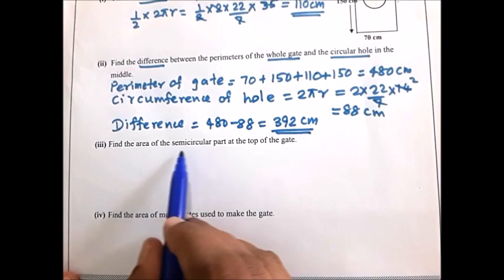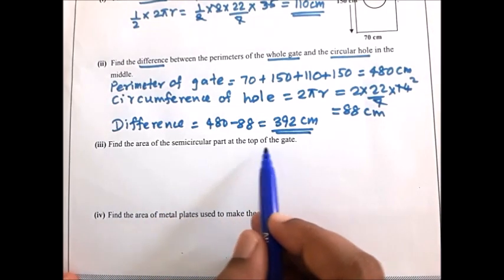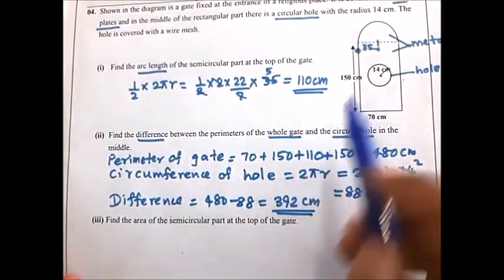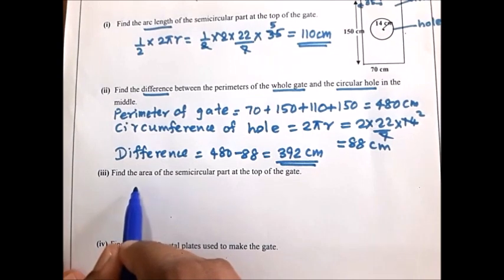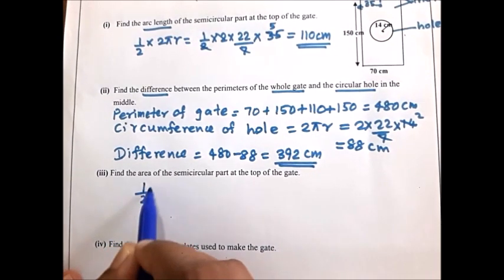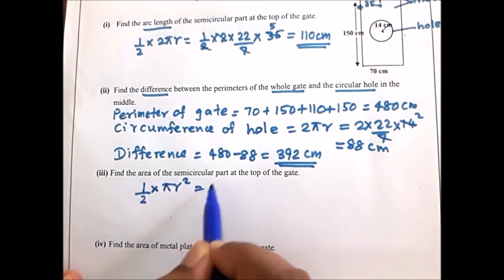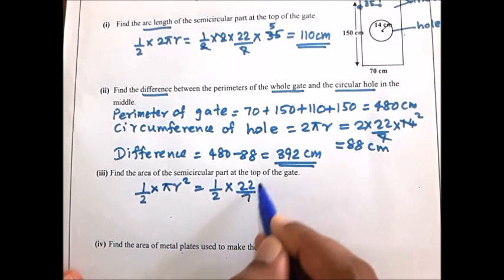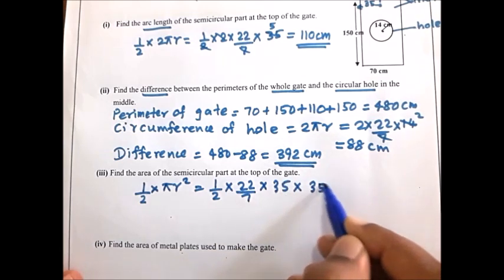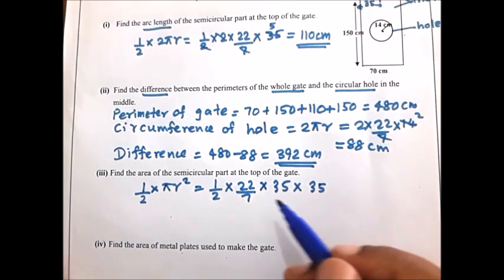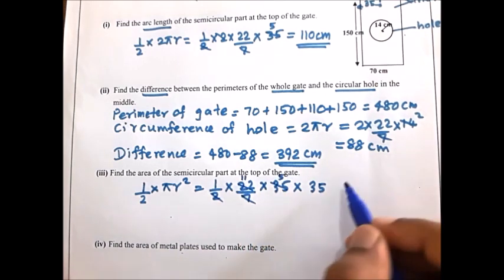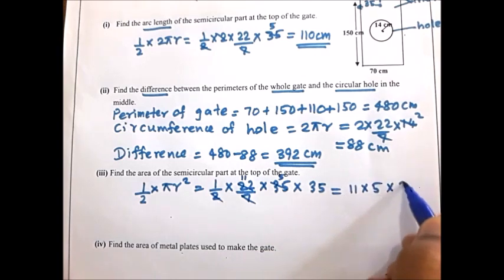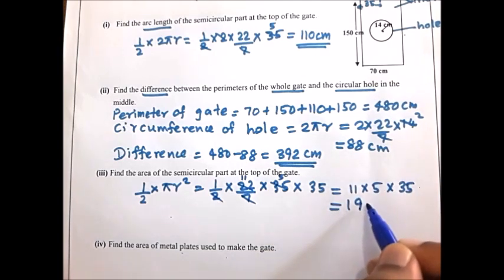Third part: find the area of the semicircular part at the top of the gate. Radius is 35. Area of semicircle is half × πr²: half × 22 over 7 × 35². Cancel 2 and 22 to get 11; cancel 7 and 35 to get 5. So 11 × 5 × 35 equals 1,925 square centimeters.